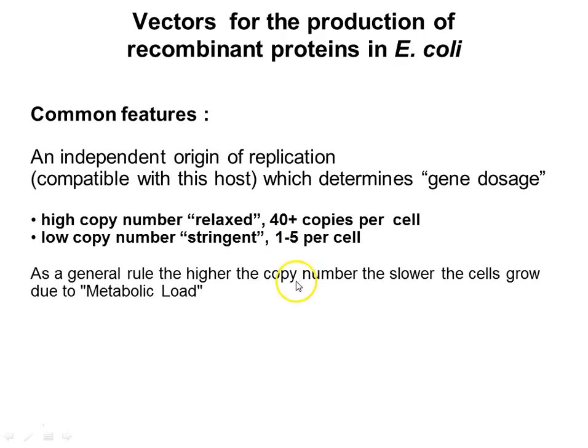Low copy number plasmids are useful for gene expression work because we want cells to grow to a high biomass to make our protein of interest, so we use low copy numbers when expressing proteins. When cloning DNA, we're interested in the DNA itself, so cloning vectors are often high copy number with large numbers of the plasmid inside the cell. Different vectors have different origins of replication; the higher the copy number, the more the metabolic load.